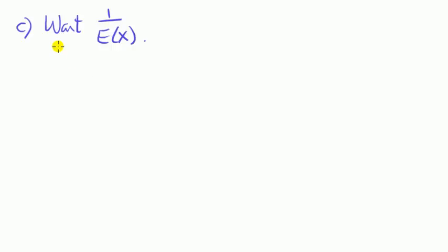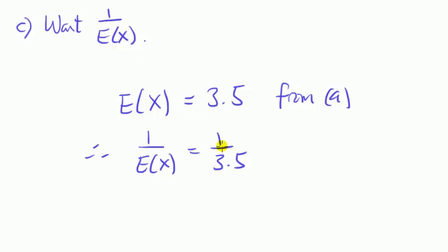C, we want 1 over expected value of x. Well, in part A, we found that the expected value of x is 3.5. So therefore, 1 over expected value of x is simply 1 over 3.5, which is equal to 0.286.